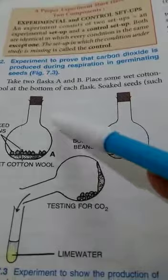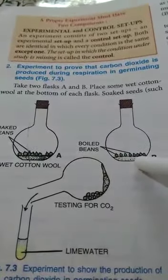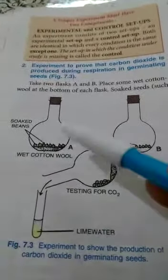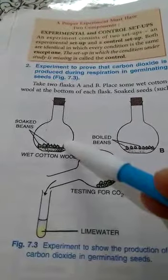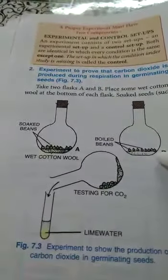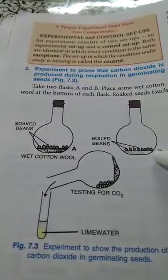In this experiment you have to take two conical flasks. In both the flasks you will place wet cotton wool at the bottom. In flask A you have to keep soaked bean seeds and in flask B you have to put some boiled seeds.